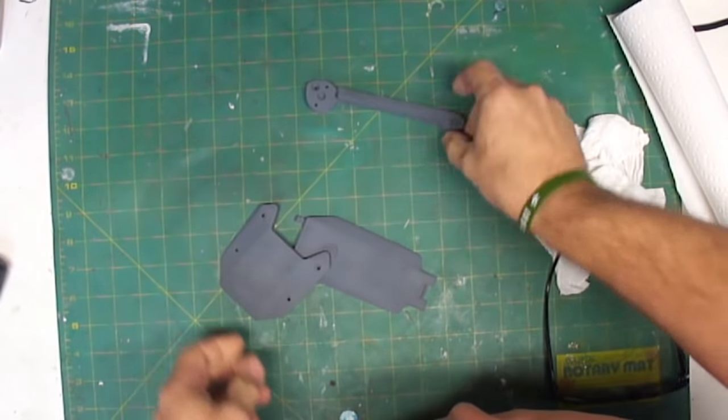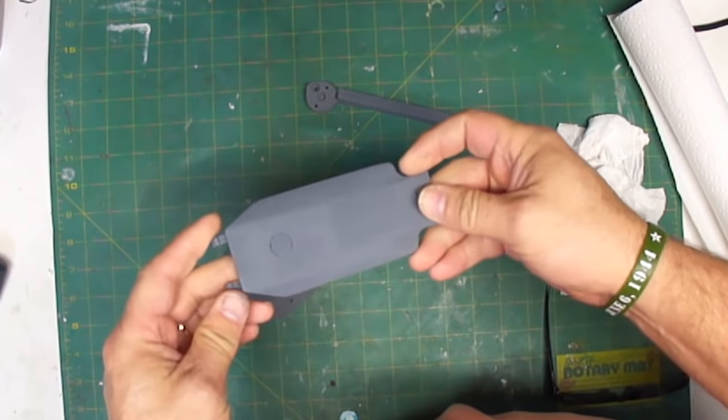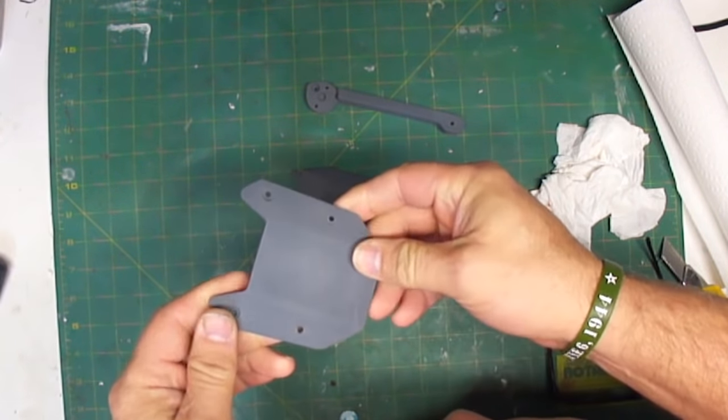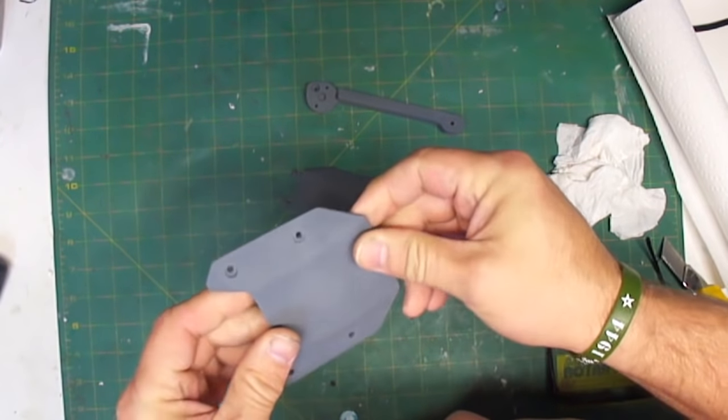So here we go. They've all been primed once again, and they're just going to get one real quick sanding down with the 400 grit, and we'll be done.